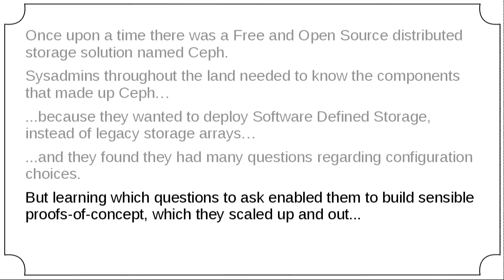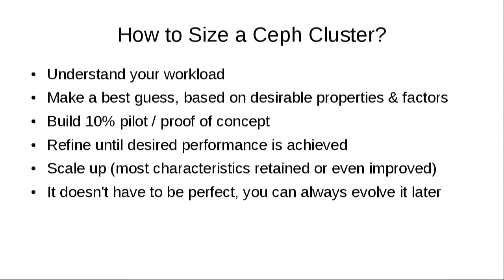Learning which questions to ask enabled sensible proofs of concept, leading to how to size a Ceph cluster. Understand your workload, then make a best guess based on the desirable properties of that workload: space — how much you need physically and virtually — cost, etc. Build a 10% pilot or proof of concept, optimally using loaner hardware from a friendly vendor who knows you're going to buy more later if it all works. Refine that until you get something like the performance you're after, then just scale it up by adding more nodes, because most characteristics of Ceph are retained or improved at scale. This doesn't have to be perfect — you can always evolve it later, wheel in newer, shinier nodes, shuffle the data off, and get rid of the old ones.